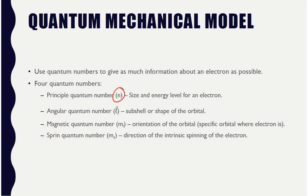The angular momentum quantum number is written as lowercase cursive l — not an a, not an e, it is a cursive l. A lowercase l is also acceptable. This quantum number tells us the subshell or the shape of the orbital.